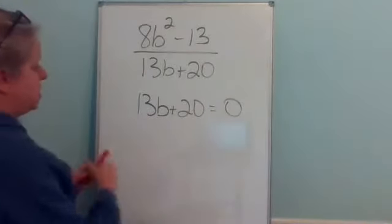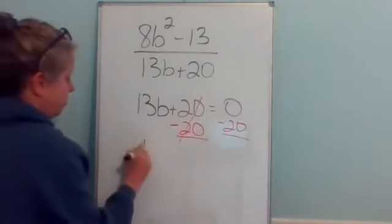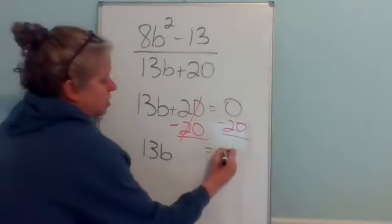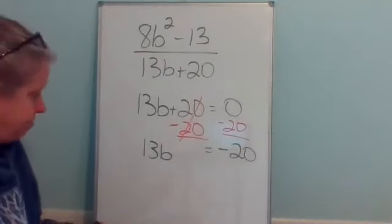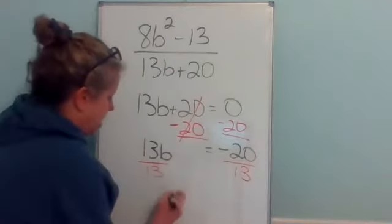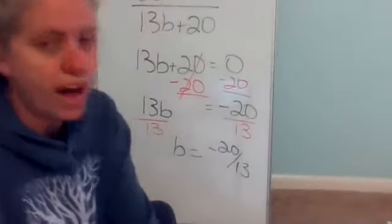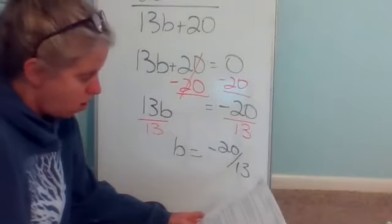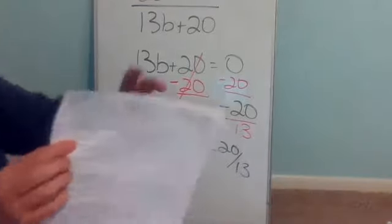To solve this one, I'm just getting b by itself. I would subtract 20 from both sides, so I have 13b equals negative 20, then divide by 13. So the rational expression is not defined for b equals negative 20 over 13.